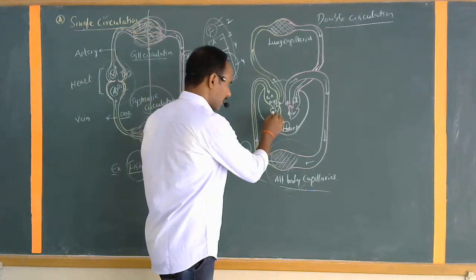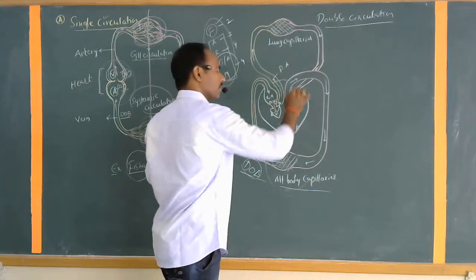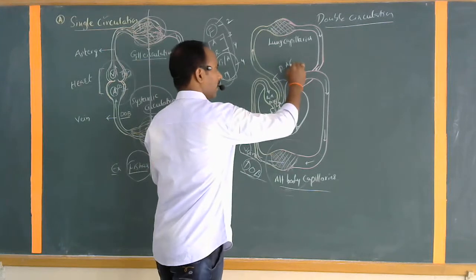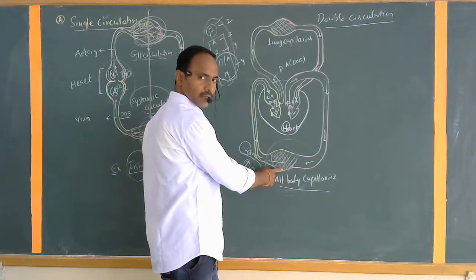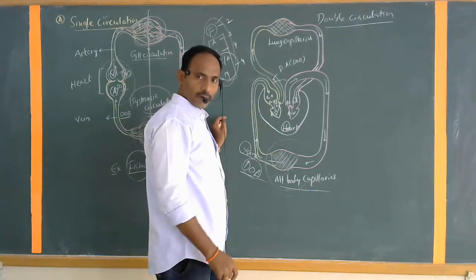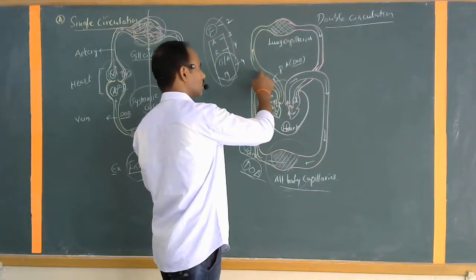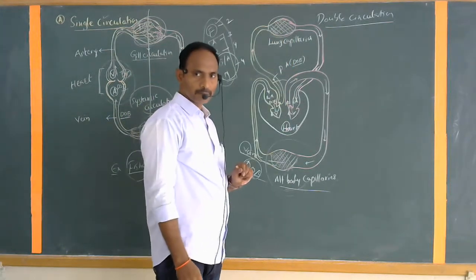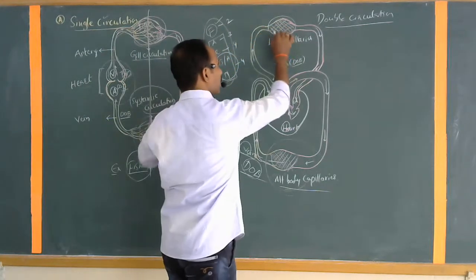The right ventricle sends the blood into a blood vessel called the pulmonary artery. All arteries contain oxygenated blood, but the pulmonary artery contains deoxygenated blood because it receives blood from the right ventricle, which received it from the body parts. The pulmonary artery carries the deoxygenated blood directly to the lungs. The lungs are highly supplied with blood capillaries where the blood is completely purified.